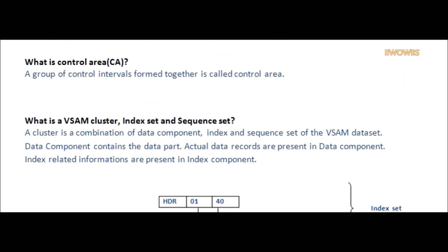Question: What is Control Area (CA)? Answer: A group of Control Intervals formed together is called a Control Area.